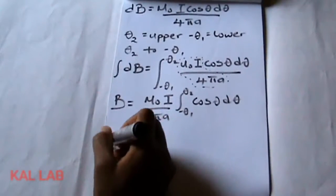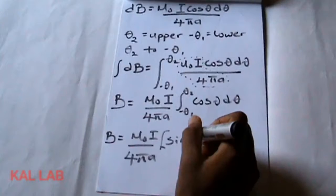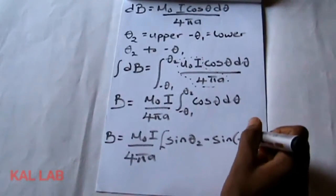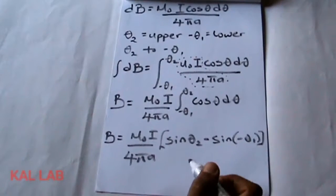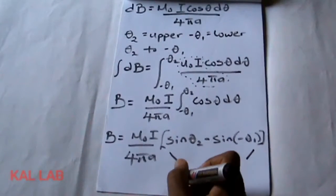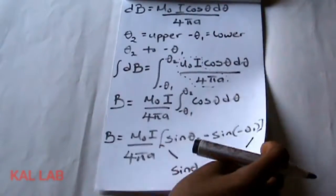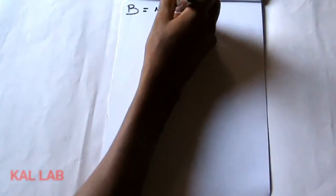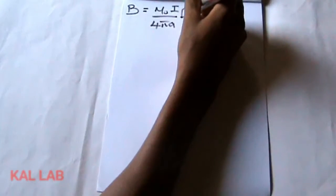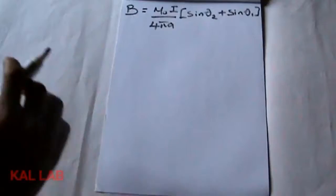The integral of cosθ is sinθ. Evaluating between the limits θ₂ and −θ₁, we get B equal to μ₀·I over 4π·a times (sinθ₂ − sin(−θ₁)), which simplifies to B equal to μ₀·I over 4π·a times (sinθ₂ + sinθ₁).